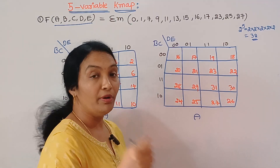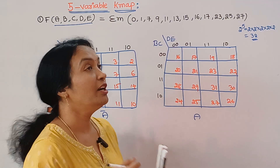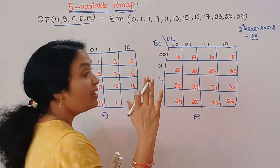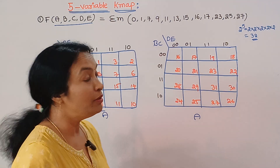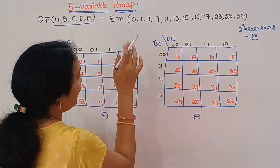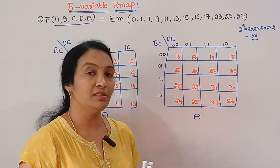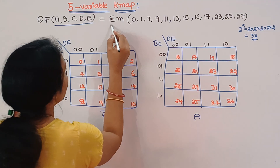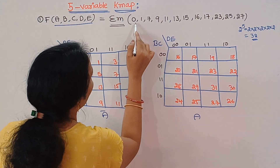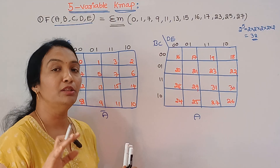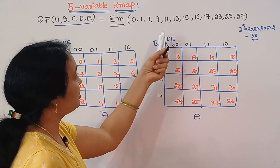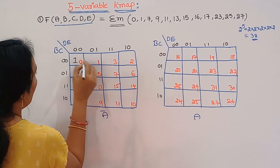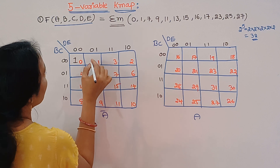When you are using SOP, that is the sum of products — we use pi of m, capital M, max terms — that is POS. POS will be covered in the next video. For the sum of products SOP, I have to insert 1s. If you are using minterm values, I will choose 1s.